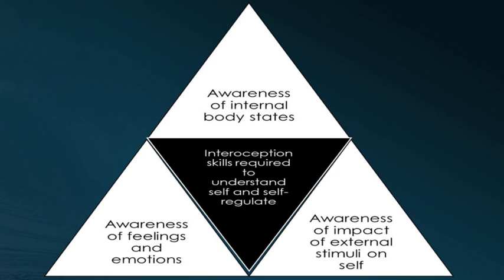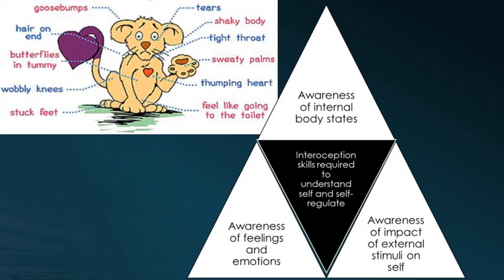There are three main aspects around interoception that are the skills required to understand ourselves and self-regulate and self-manage. The initial one is the awareness of internal bodily states — for example, do I have a tight throat, sweaty palms, thumping heart? This is the very base of our embodied sense of self, our awareness of self and how we feel and of our emotions.